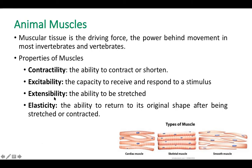Then extensibility — like stretch. Contraction and extension are opposites. Then elasticity: muscles can return to their original shape after being stretched and contracted. These are the four properties of animal muscles: contractility, excitability, extensibility, and elasticity.